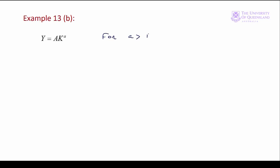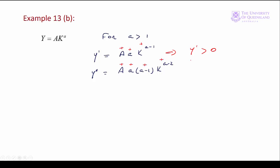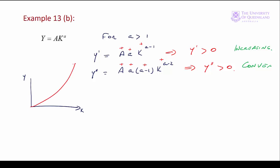For a greater than 1: the first derivative equals A times a times k to the (a minus 1). A is positive, little a is positive, k to the (a minus 1) is positive, so y prime is greater than zero — an increasing function. The second derivative equals A times a times (a minus 1) times k to the (a minus 2). This time (a minus 1) is positive since a is greater than 1, so all four terms are positive and the second derivative is greater than zero. Our function is increasing and convex — the graph starts at the origin and curves upward.